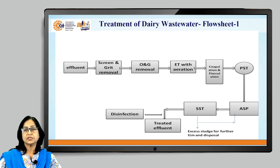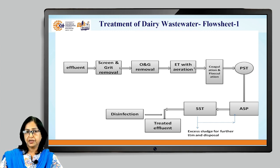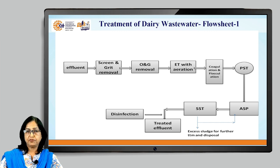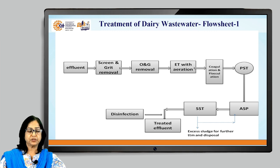In flow sheet 1, the effluent is taken to screen and grit removal, followed by oil and grease removal, then equalization with aeration, and coagulation-flocculation-settling. The supernatant from the primary settling tank (PST) is taken for secondary treatment — the activated sludge process followed by a secondary settling tank — while sludge is sent to a sludge drying bed. Excess sludge is sent for further treatment and disposal; part of the sludge is recycled to maintain MLVSS. The supernatant from the secondary settling tank is disinfected and then disposed of as treated effluent.